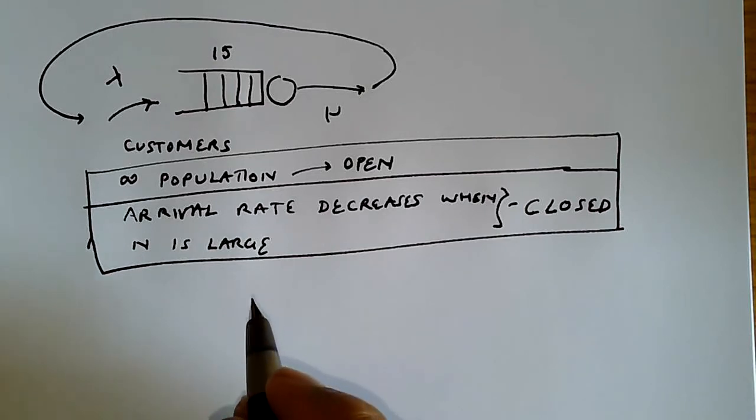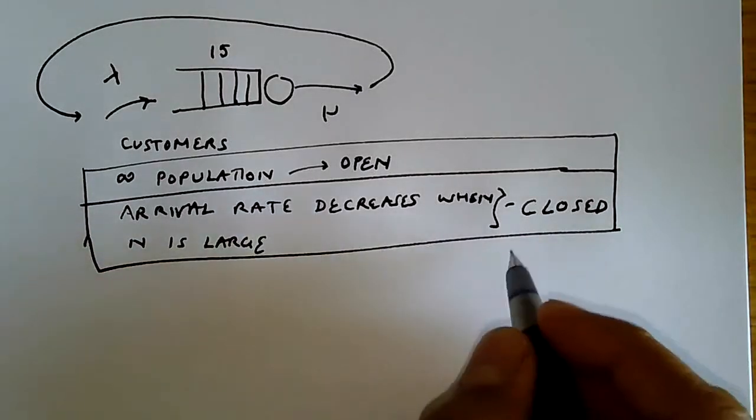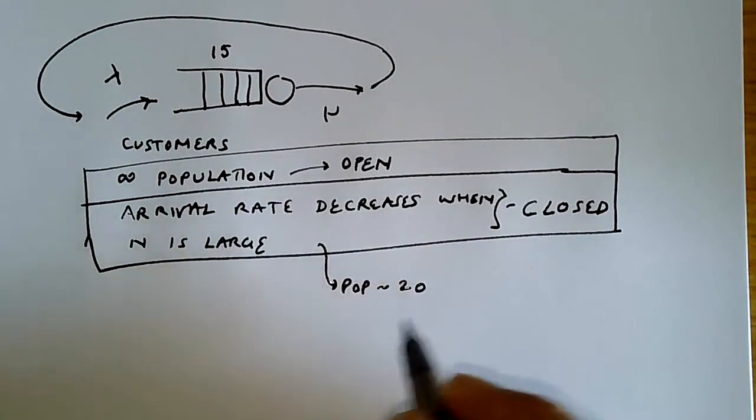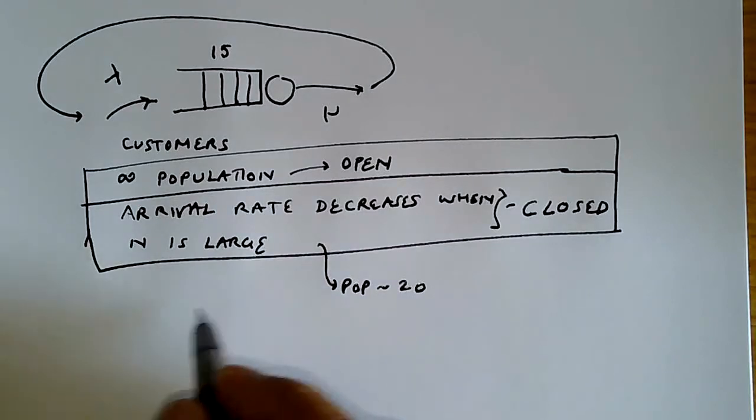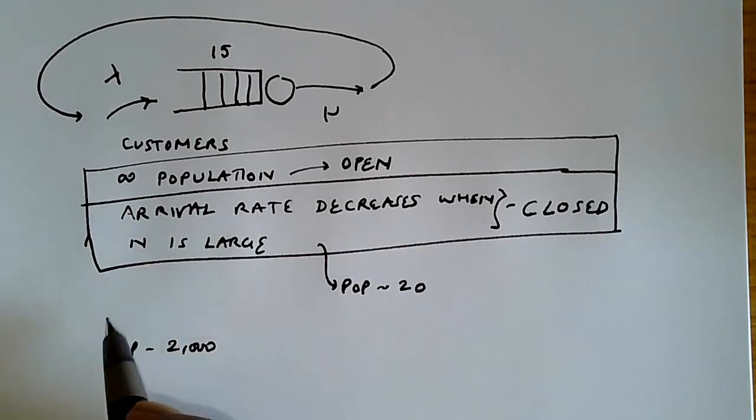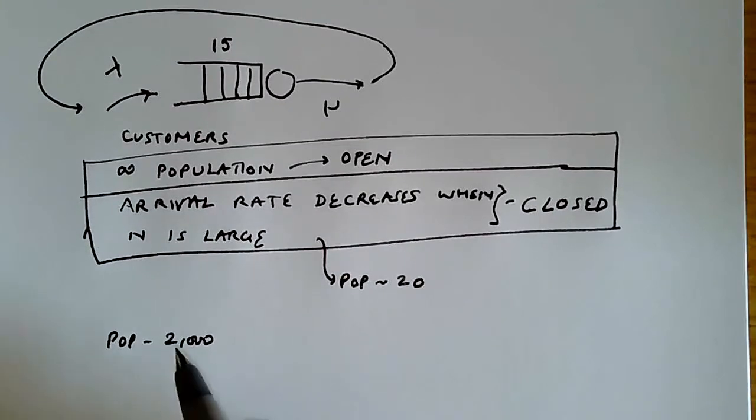But quite often, we will take measurements from one closed system, for example when the population is 20, and use it in a different closed system where the population is 2,000. When this happens, the measurements taken in the first closed system cannot really be used in another closed system.